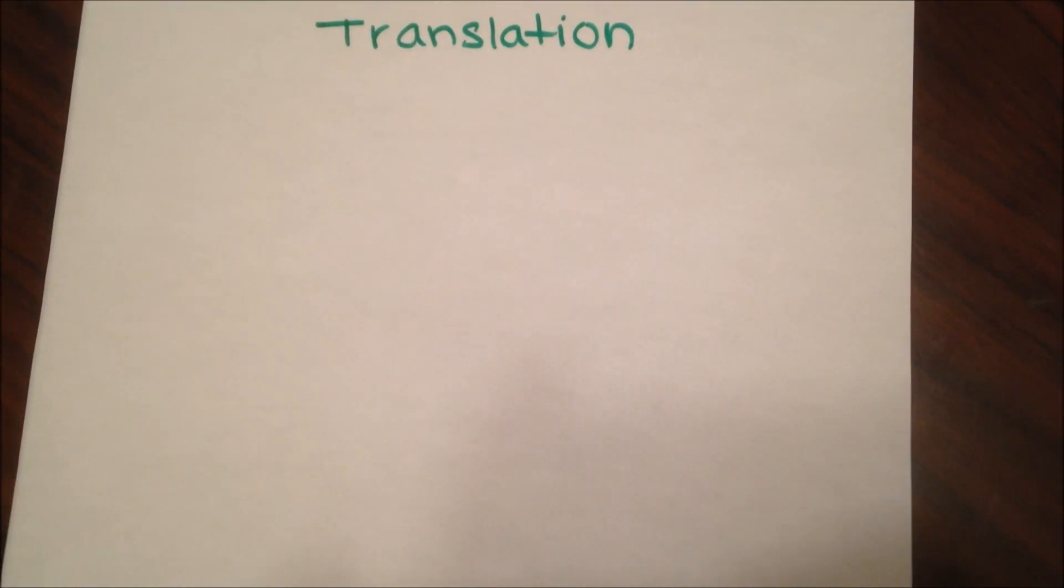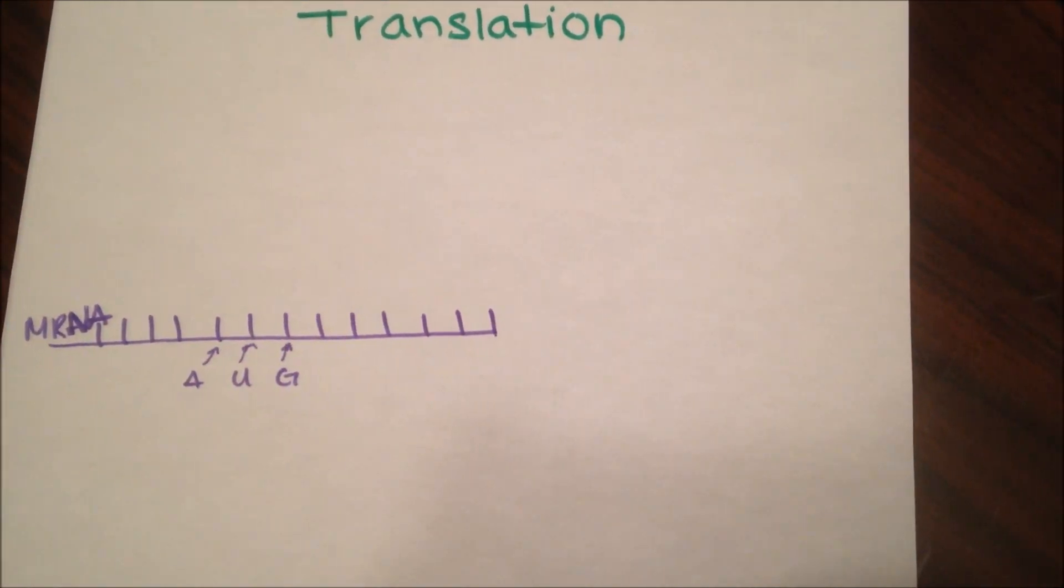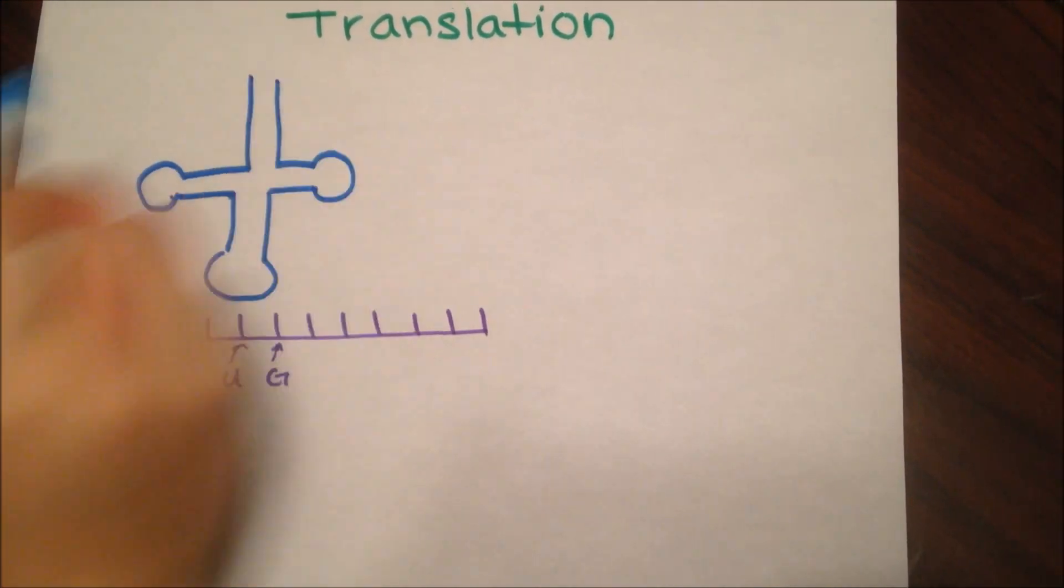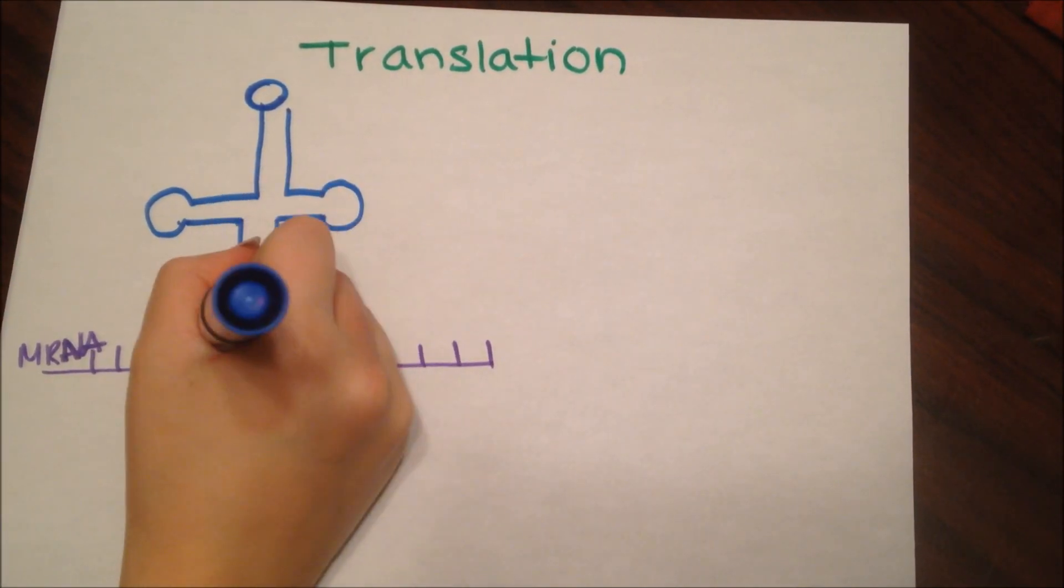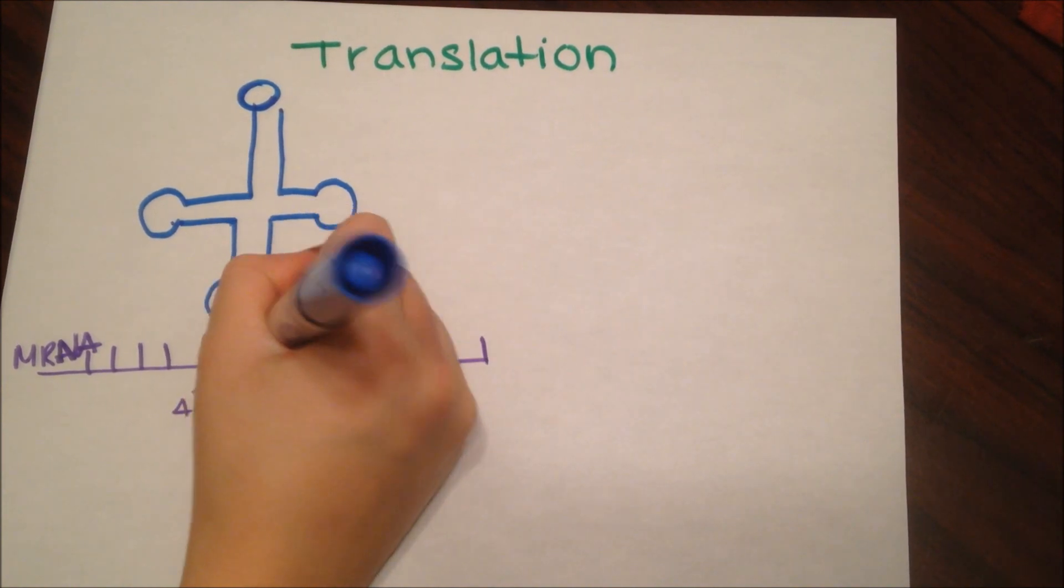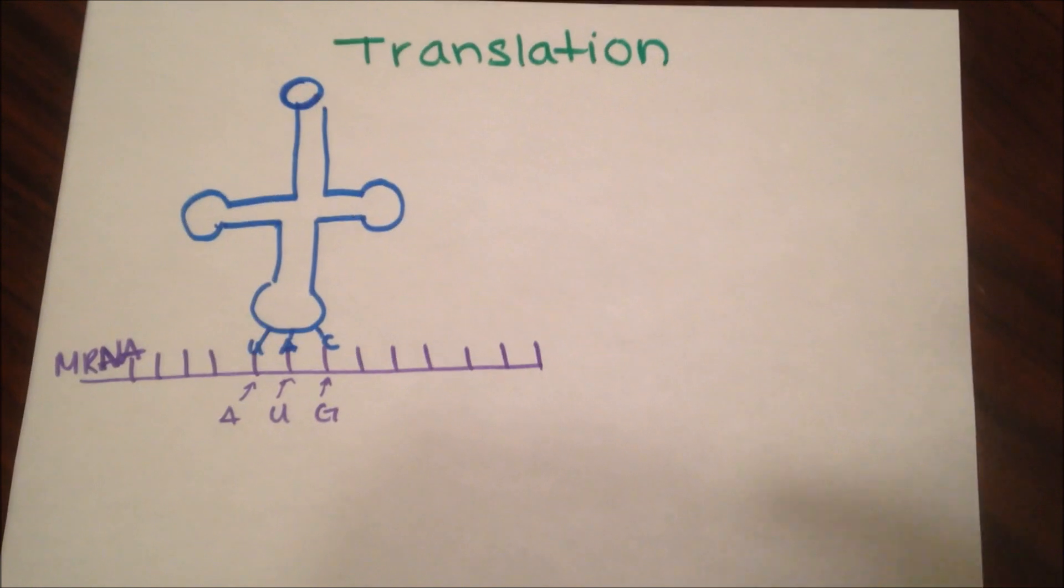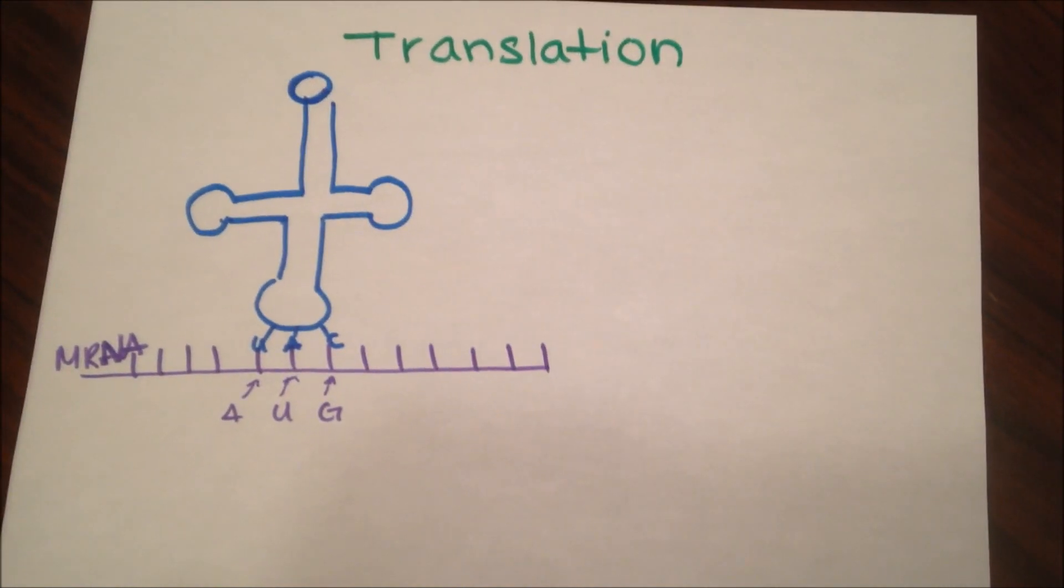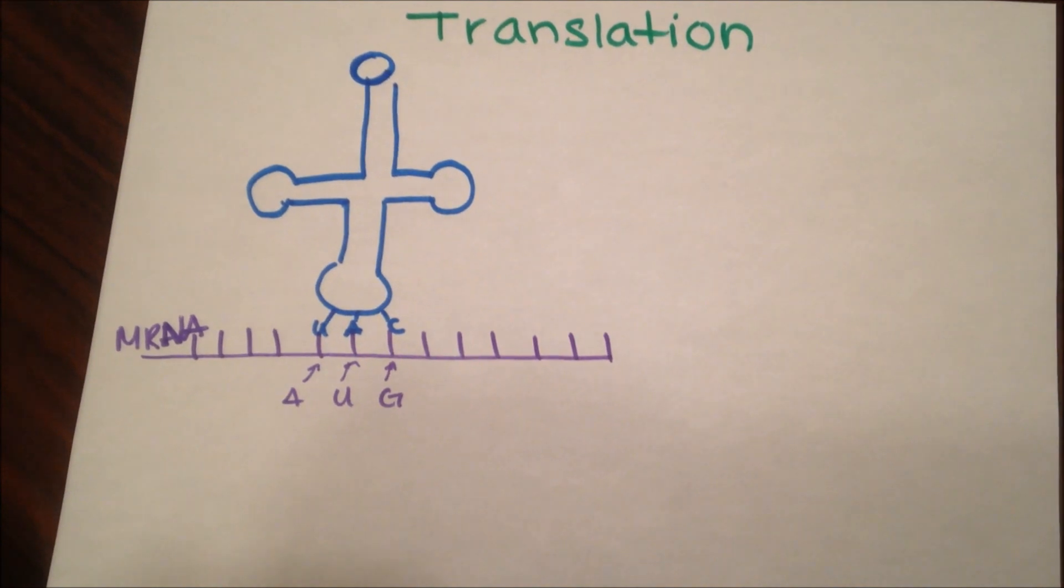Translation. Here is the mature mRNA strand. And here is the tRNA strand, most likely named for its T shape. At the bottom is the anticodon arm, named because it has the base pairs for the codon of mRNA it attaches to. Here is the start codon for tRNA, AUG, in which tRNA carries the anticodon, UAC.